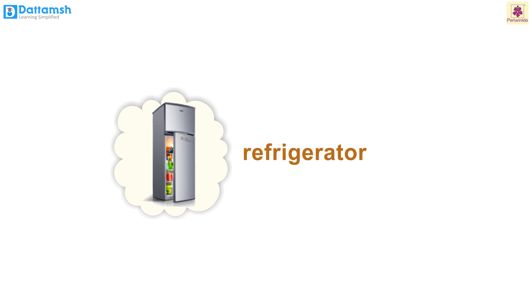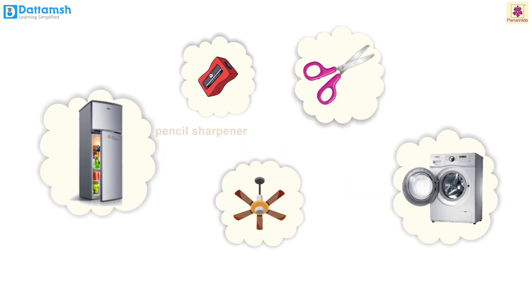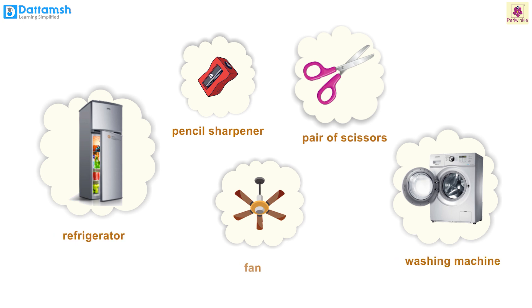A refrigerator that keeps our food cold, fresh, and safe. A washing machine that is used to wash clothes. Yes, these all are machines that make our lives easier by helping us do our work faster and quicker.